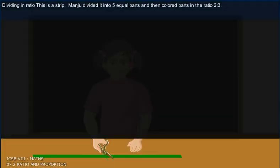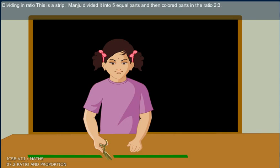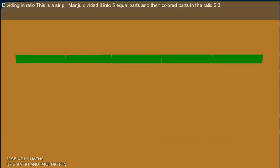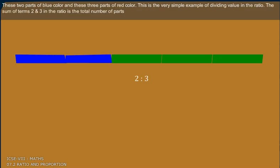Dividing in ratio. This is a strip. Manju divided it into 5 equal parts and then colored parts in the ratio 2 is to 3. These 2 parts of blue color and these 3 parts of red color. This is the very simple example of dividing value in the ratio. The sum of terms 2 and 3 in the ratio is the total number of parts.